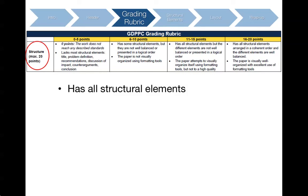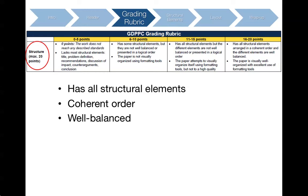First, your paper should have all the structural elements — we'll go into more detail on this in the next slides. Second, your paper should be presented in a coherent order, meaning your arguments should have a logical flow so the reader can easily follow what you're saying. Third, make sure all the different parts of your paper are well balanced. For example, don't spend three paragraphs on defining the problem and then just one paragraph on all your recommendations. Try to spend an equal amount of time on each part, otherwise the content will appear unbalanced.